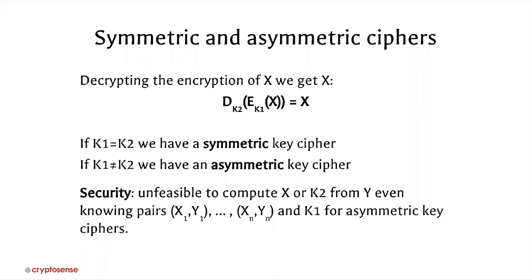So what does security mean? These schemes are secure if it's not possible for an intruder to figure out the plaintext x or the decryption key K2 from the ciphertext y, even if the adversary knows a whole bunch of corresponding pairs of plaintext and ciphertext x1, y1 to xn, yn, and their corresponding encryption key one in the case of an asymmetric key cipher. We give the intruder a whole bunch of examples — this is the encryption of this message using that key — so the intruder has a lot of knowledge about how the system is working.